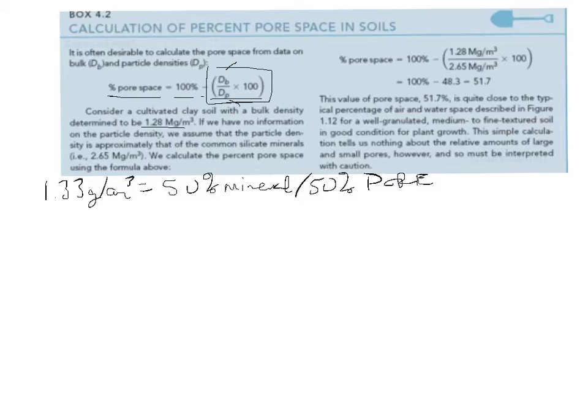If you're not given a particle density, you can assume that particle density is 2.65—this number here. So generally speaking, we assume that's the case, unless we know it's from different materials, say volcanic materials, something like that.